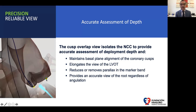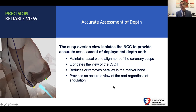When we overlap the right and left cusp during implantation — during the X-ray view of the implantation — we achieve better alignment to see where the conduction system is, which is slightly more separated from the annulus. This is because we have an elongation of the view of the LVOT, we reduce parallax of the valve, and we provide better angulation even in a very angulated aorta.